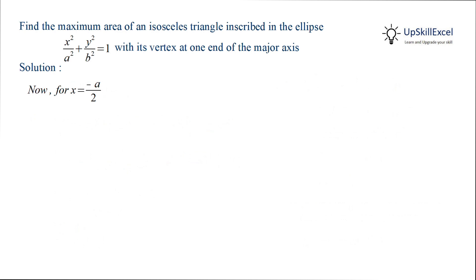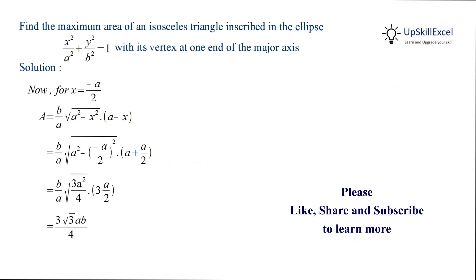Now substituting x = -a/2 in the formula of area we get that the area is equal to 3√3ab/4.